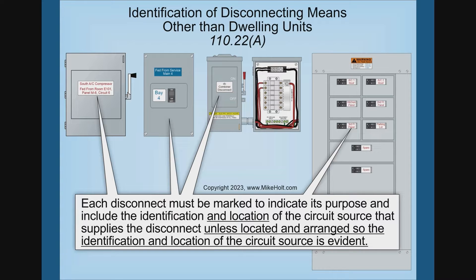That requirement was added a few code cycles ago. And now it says include the identification of the circuit — what it said before — so you have to know, this is the identification, that panel, whatever the case. And now it also includes the location of the circuit source that supplies the disconnect, unless located in a manner so that the identification and the location of the circuit source is evident. This is a great change for big buildings — you have a disconnect on the seventh floor and an electrical room on the third and fifth floor, and now you just put the panel number and also say 'located in the third floor electrical room.'